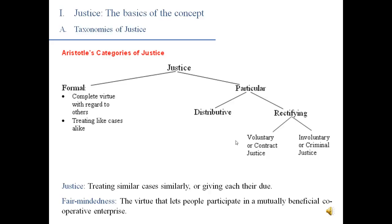Particular justice gets further divided into distributive and rectifying or retributive justice. Rectifying or retributive justice is about how you treat people when things have gone wrong — this is where we get criminal justice. Criminal justice is a form of rectifying or retributive justice. It refers to a specific subcategory: the laws imposed on everyone in a country whether they like it or not. The other half of retributive justice is contract law, which is about things you enter into voluntarily. Healthcare doesn't have to deal much with rectifying or retributive justice.